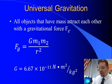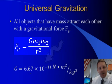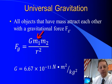This is given quantitatively by the equation force of gravity is equal to big G, that's a constant, the universal gravitational constant, equal to 6.67 times 10 to the minus 11th Newton meters squared per kilogram squared, times the mass of the first object, the mass of the second object, divided by the square of the distance between them.